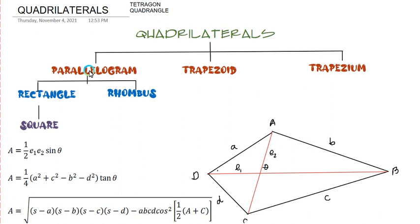Just like what we discussed in our polygon topic, quadrilaterals have common parts similar to polygons. These parts include sides — referring to a line segment joining any two adjacent vertices — and the corners of your quadrilateral. We also consider interior angles, which refers to the angle formed between two adjacent sides. Just like in the polygon topic, we also have height or altitude.